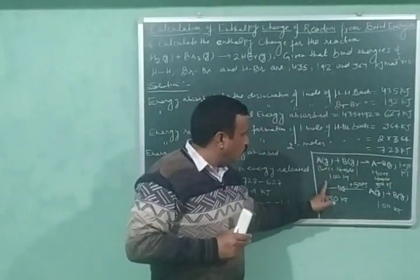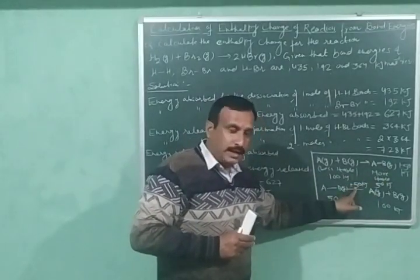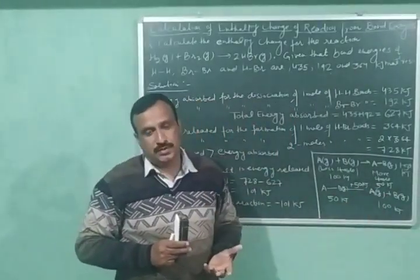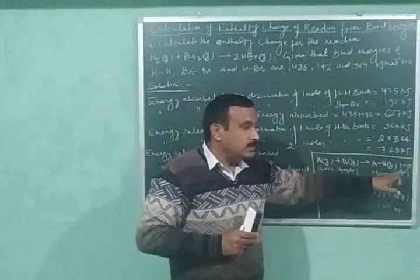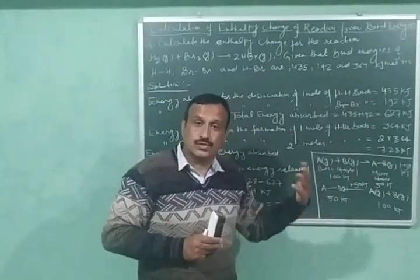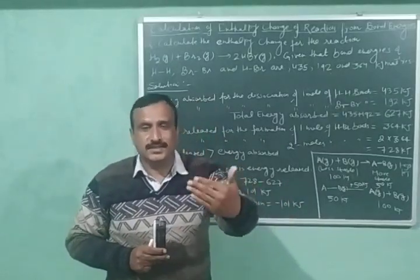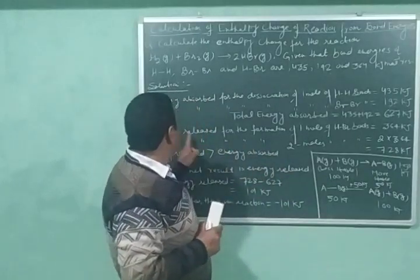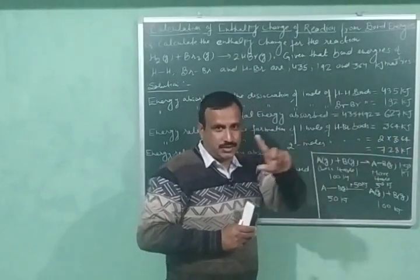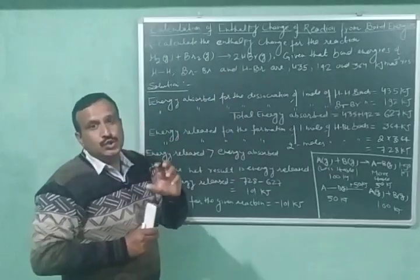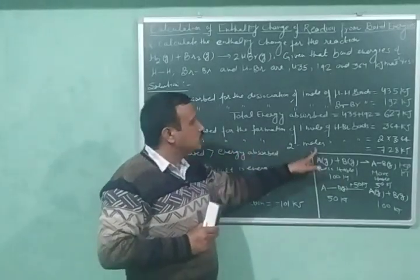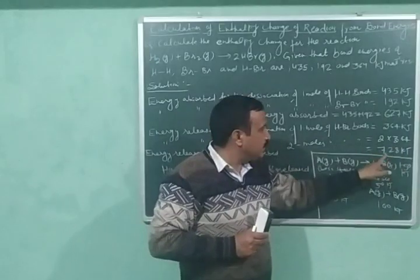When we want to dissociate one mole of AB bonds, the same amount of energy is supplied and the molecule dissociates into atoms. In this way, energy released is equal to the bond energy, or bond energy is equal to the energy released. That is why the energy released for the formation of one mole of H-Br bond is equal to 364 kilojoule, its bond energy. Since 2 moles of H-Br are being formed, the energy released will be equal to 2 into 364, that is 728 kilojoule.